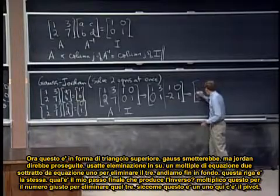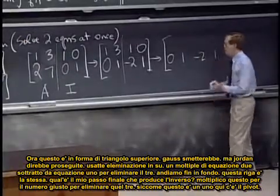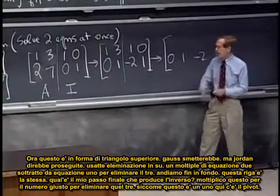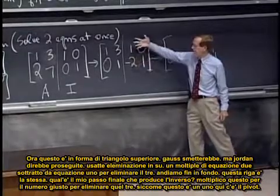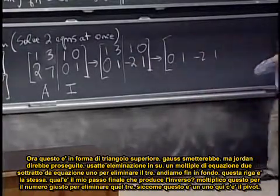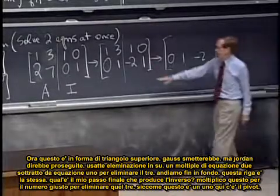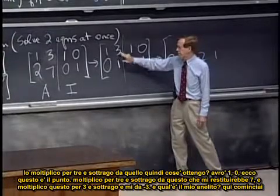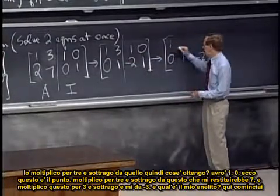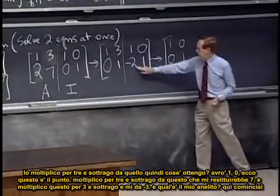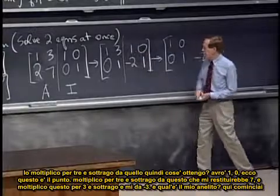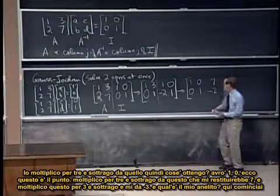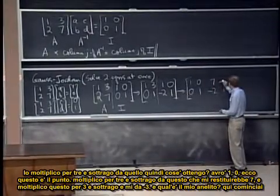So now I'm going to, this guy is fine, but what do I do now? What's my final step that produces the inverse? I multiply this by the right number to get up to there, to remove that three. So I guess since this is a one, there's the pivot sitting there. I multiply it by three and subtract from that. So what do I get? I'll have one zero. Whoa, yeah, that was my whole point. I'll multiply this by three and subtract from that, which will give me seven. And I multiply this by three and subtract from that, which gives me a minus three.